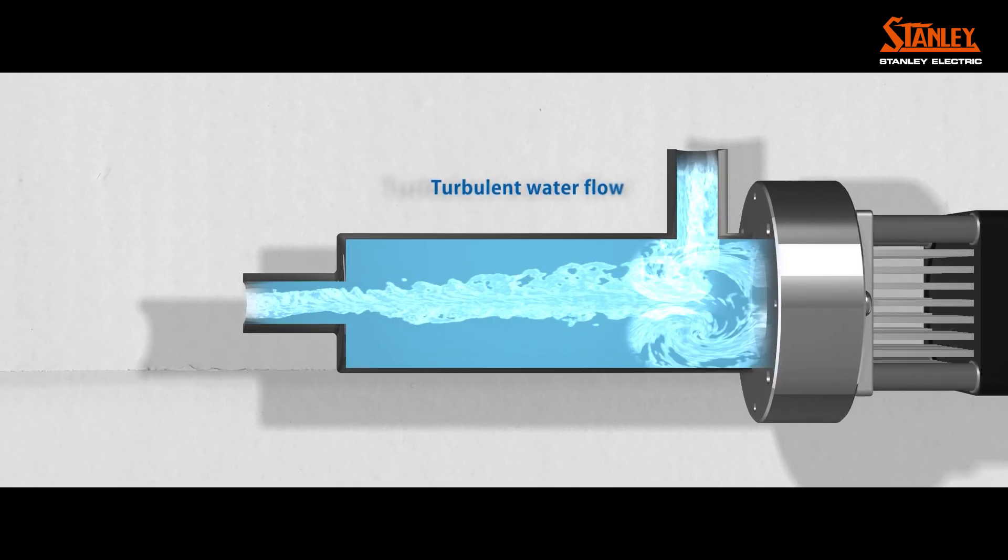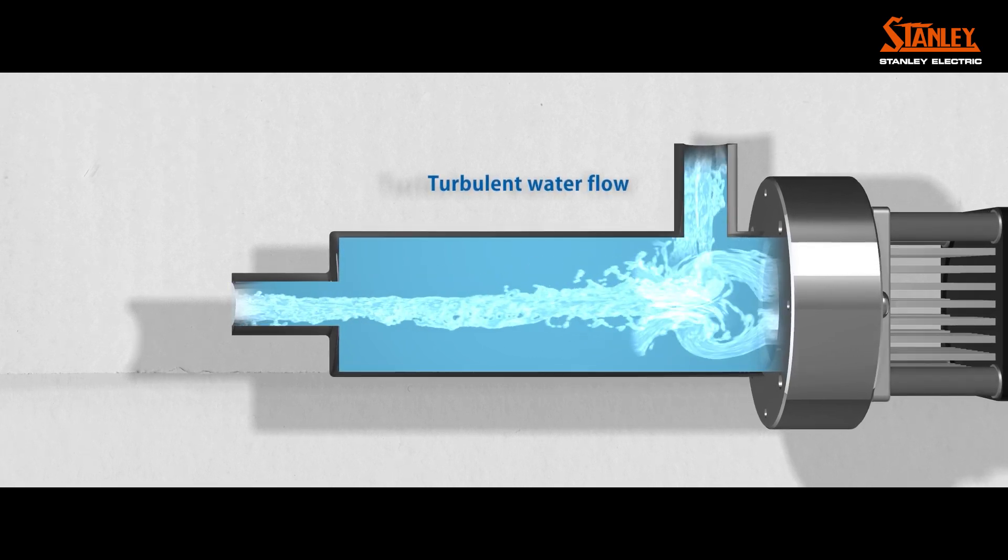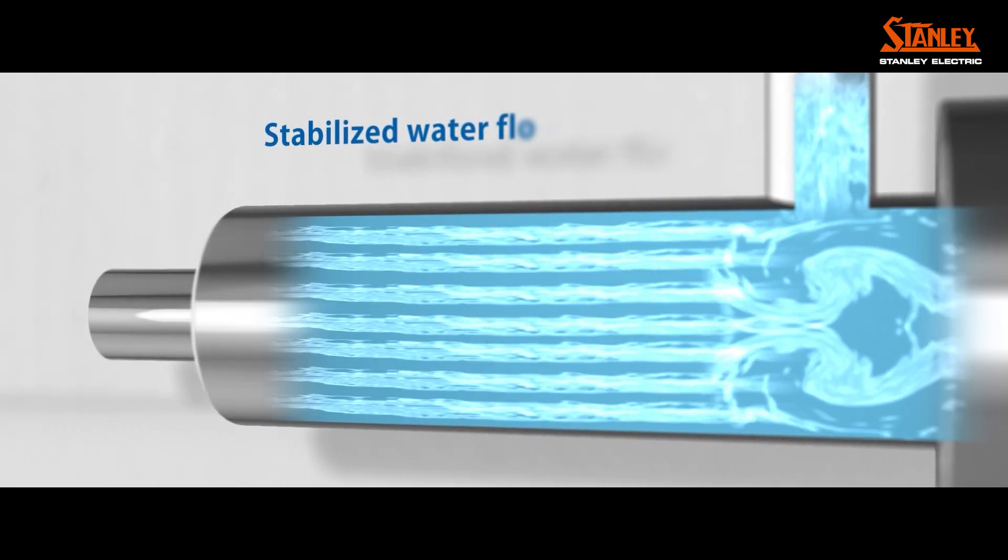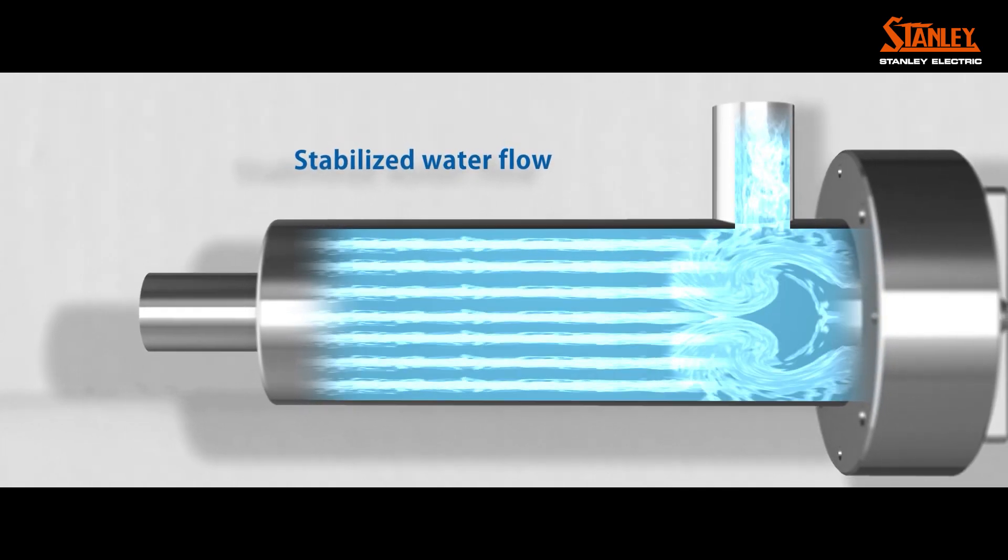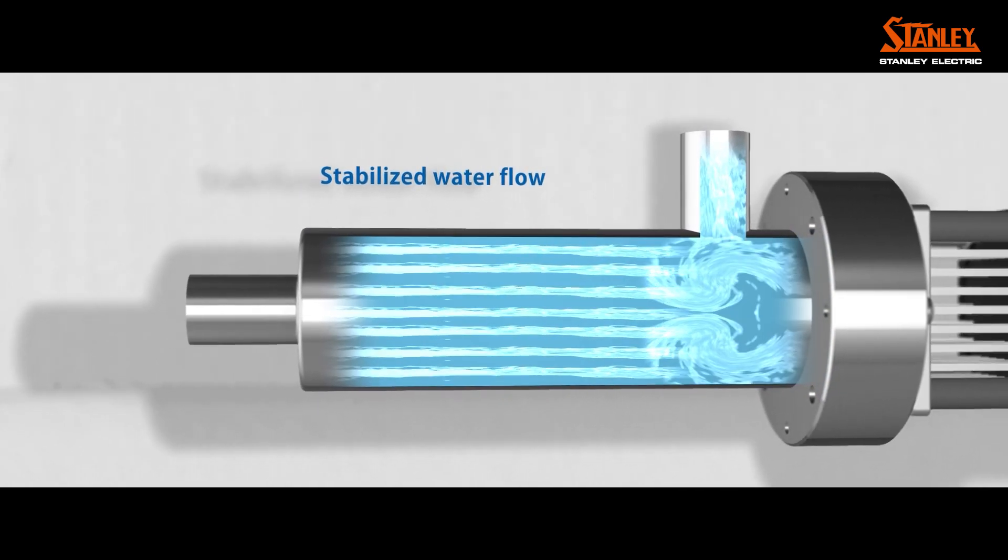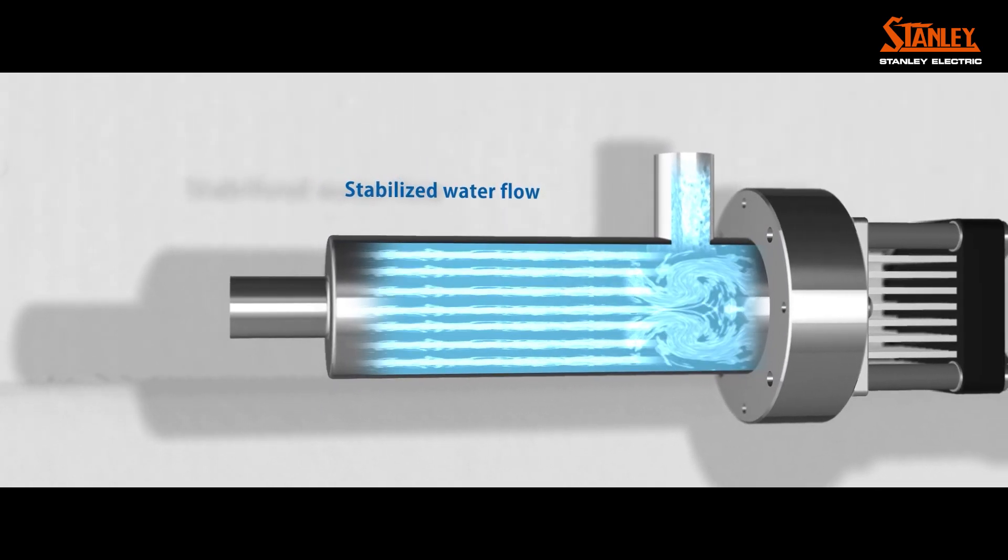Normally, flowing water becomes turbulent in the piping. However, by passing through the rectification mechanism at the inlet of the disinfection device, the water inside will be converted into a constant flow.